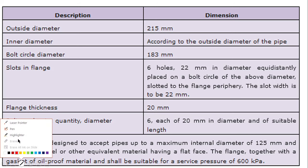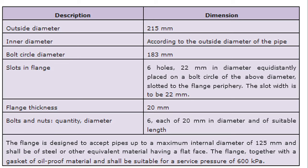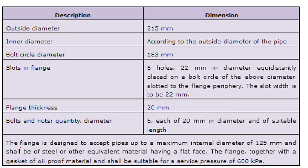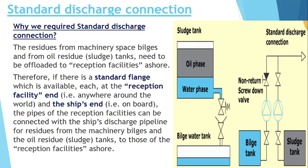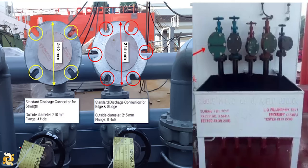If anybody asks you the main highlight points, you should say: the outside diameter is 215 mm, there should be 6 holes, it can hold a pressure of 600 kPa, and the slot is 22 mm. Additionally, it should have a bolt circle diameter (BCD) of 183 mm and a flange thickness of 20 mm. These are the important highlights you must mention during examination. In today's video we have learned why the standard discharge connection requirement was provided and what the standard discharge connection diameter should be.